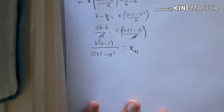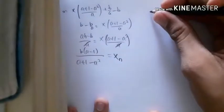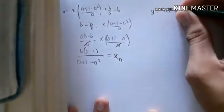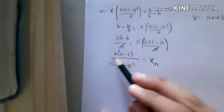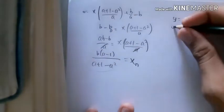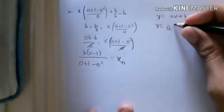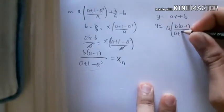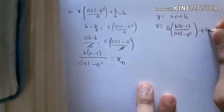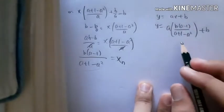Now for y_n, we just substitute it. We know that y is ax plus b, and we know that x_n is this one. So we can substitute it to that. So y = a × [b(a-1)/(a+1-a²)] + b.